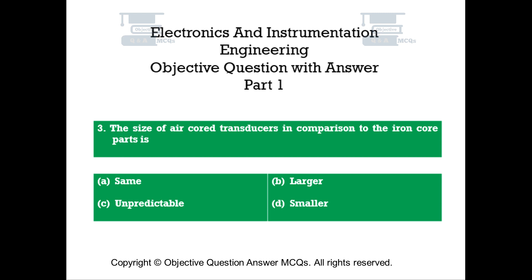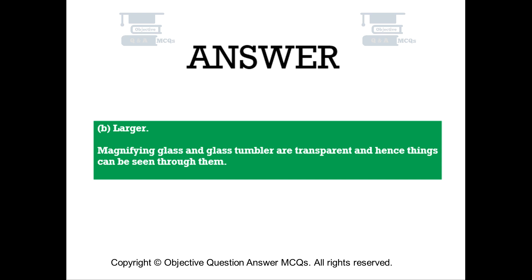Question number 3. The size of air core transducers in comparison to the iron core parts is: Option A: Same. Option B: Larger. Option C: Unpredictable. Option D: Smaller. The right answer is Option B — Larger. The size of air core transducers is larger in comparison to the iron core parts.